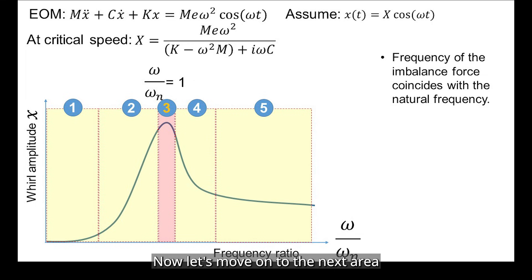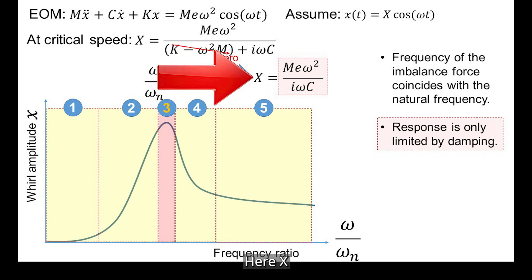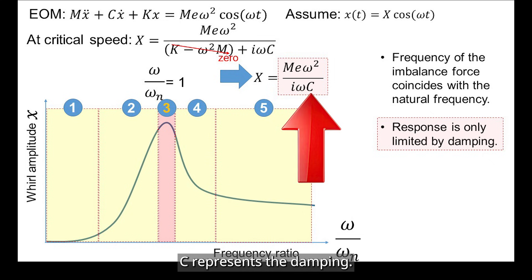Now, let's move on to the next area of interest. Frequency ratio of 1 is the most dangerous region, where rotor speed matches the natural frequency. At this point, the response amplitude spikes, and the simplified equation tells us the amount of damping in your system becomes the key variable in controlling peak vibration. Here, X is the amplitude of shaft vibration. In the denominator, C represents the damping.